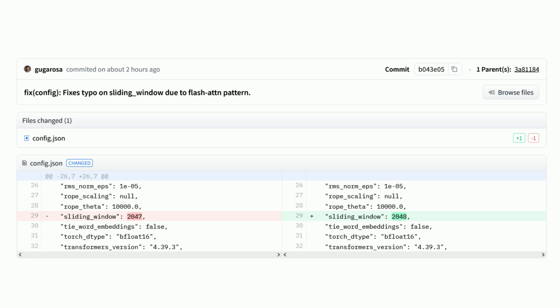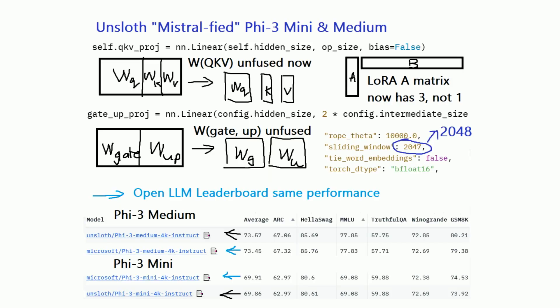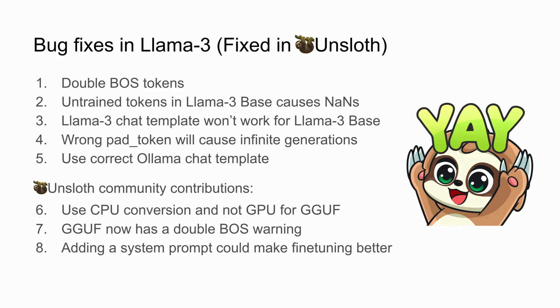For example, the sliding window should be 2048, not 2047. You should also unfuse all of the QKV matrices, otherwise LoRA fine-tuning will not work that well. But we'll be talking mainly about Llama 3.